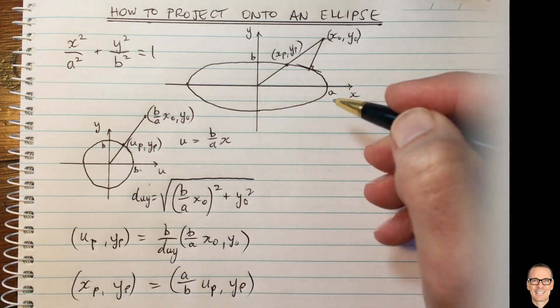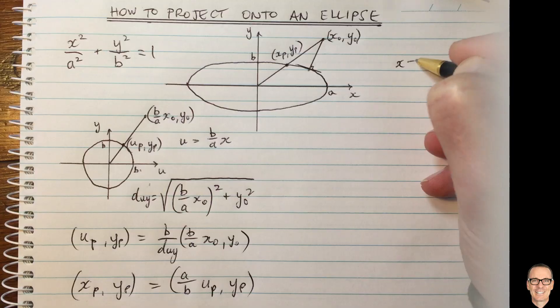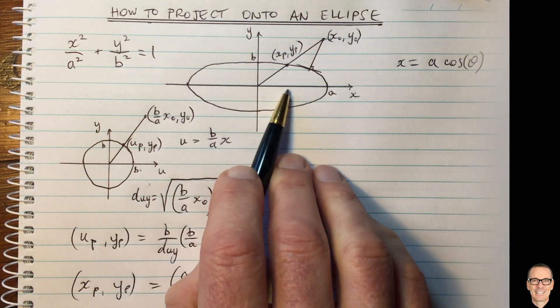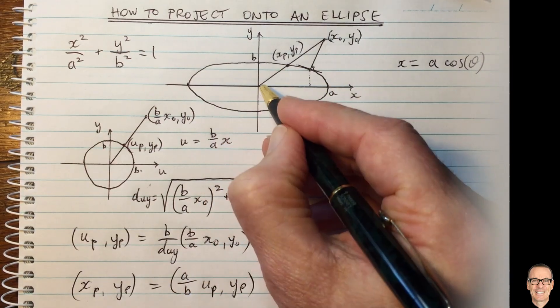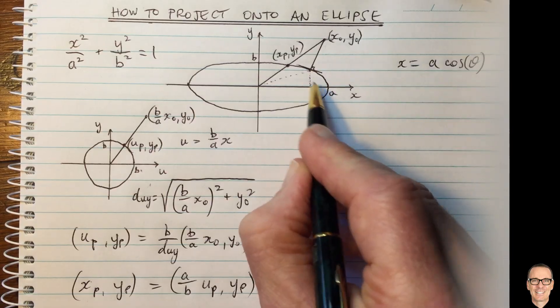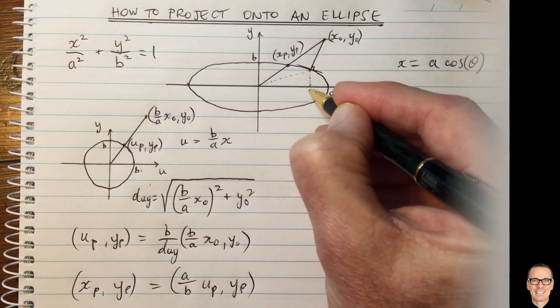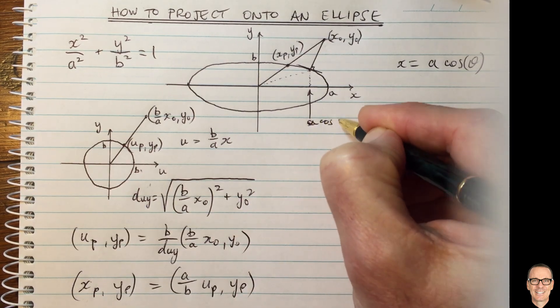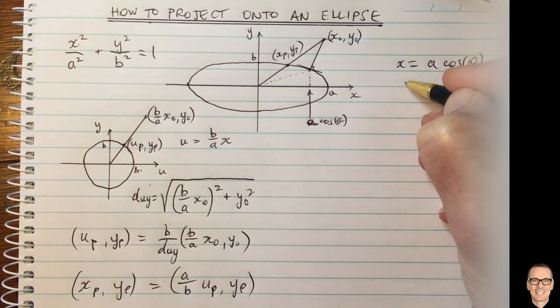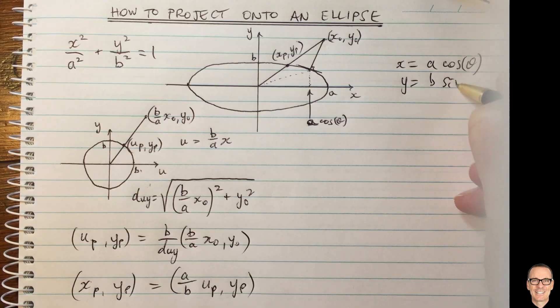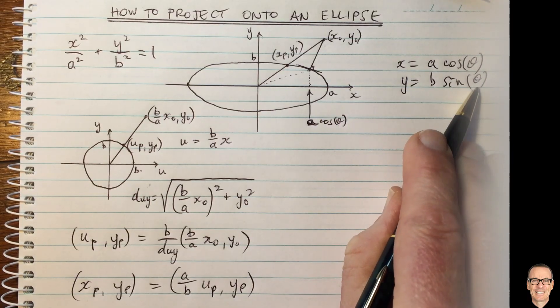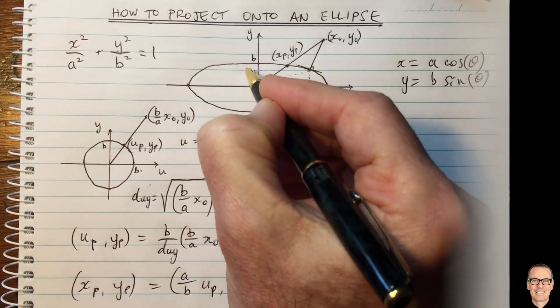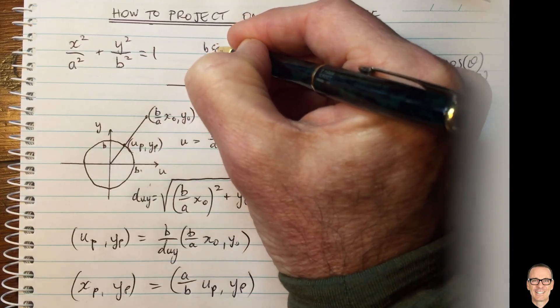Well something that's a clever trick that we can do is we can write x equals a cos theta. We define this variable theta which is the angle around from the x-axis. So for a point on the ellipse, this is x, this is a cos theta, and we define y equals b sine theta. So we've introduced this theta for parameterizing around here, and this is going to be this value on the y-axis here. This is b sine theta.